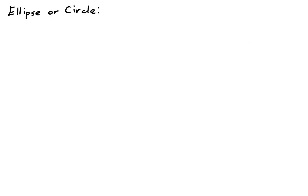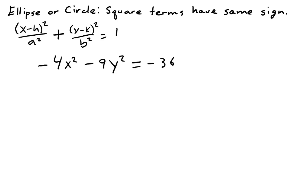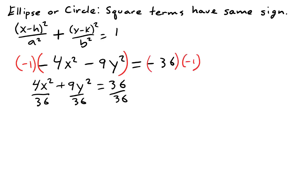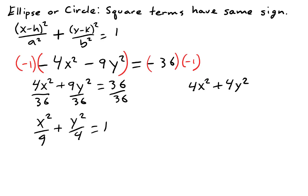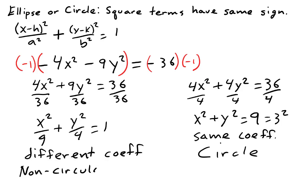In the equation of an ellipse or a circle, the square terms have the same sign. If you have an equation in which both square terms are negative, you can simply multiply the equation on both sides by negative 1 to put it into the more familiar form with both square terms positive. If the coefficients on the square terms are the same, then the ellipse has the same length as height — in other words, it's a circle. If the coefficients are different, then the length is different from the height, meaning this is a non-circular ellipse.